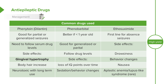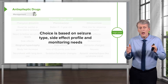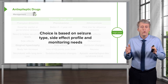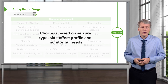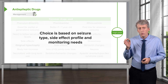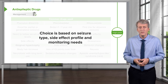The general principle is there are lots of drugs we use in children. We need to know the side effects and which drugs are most effective for which seizure syndromes. It really comes down to the side effect profile, your monitoring needs, and the seizure type.